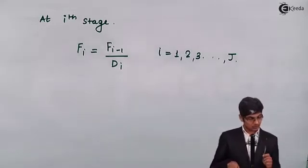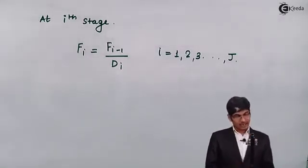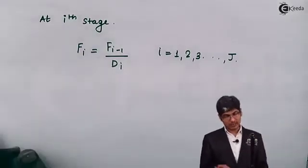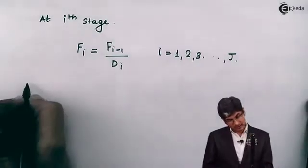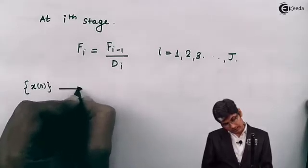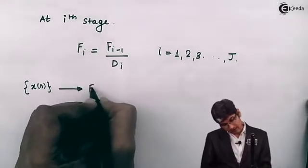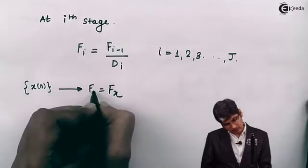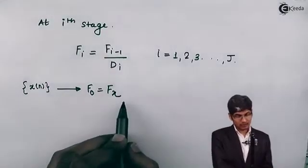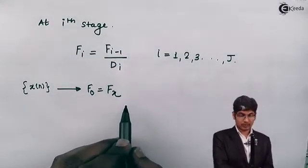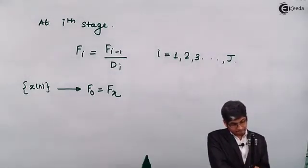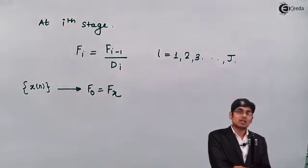At the initial stage — the zeroth stage, which is the input stage — the signal x(n) is sampled at rate fx. So f_0 = fx. This is the starting point for the recursive formula f_i = f_{i-1} / d_i applied from stage 1 through stage J.